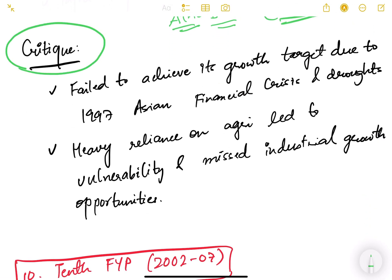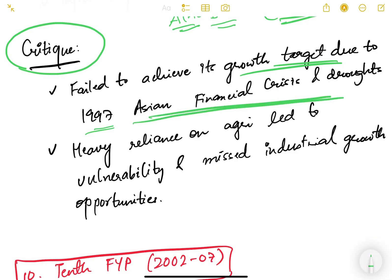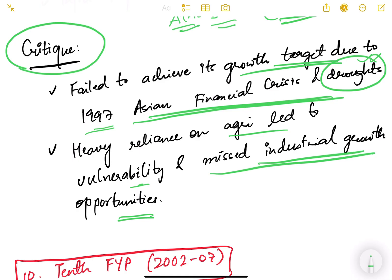Critics of this plan noted it failed to achieve its growth rate target due to the 1997 Asian financial crisis affecting countries like Thailand and other Southeast Asian nations. Droughts during this period also affected agriculture. Heavy reliance on agriculture led to vulnerability and missed industrial growth opportunities, especially for MSMEs.